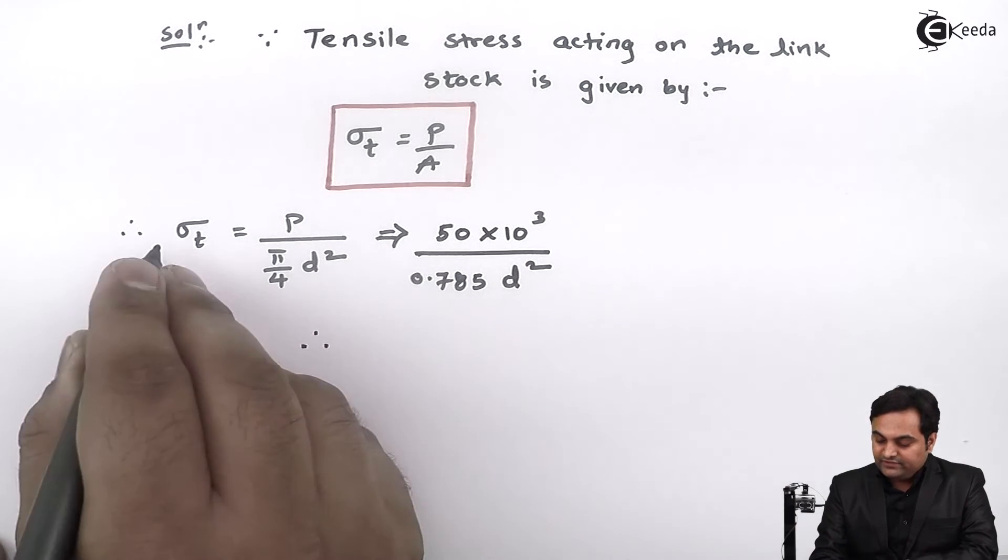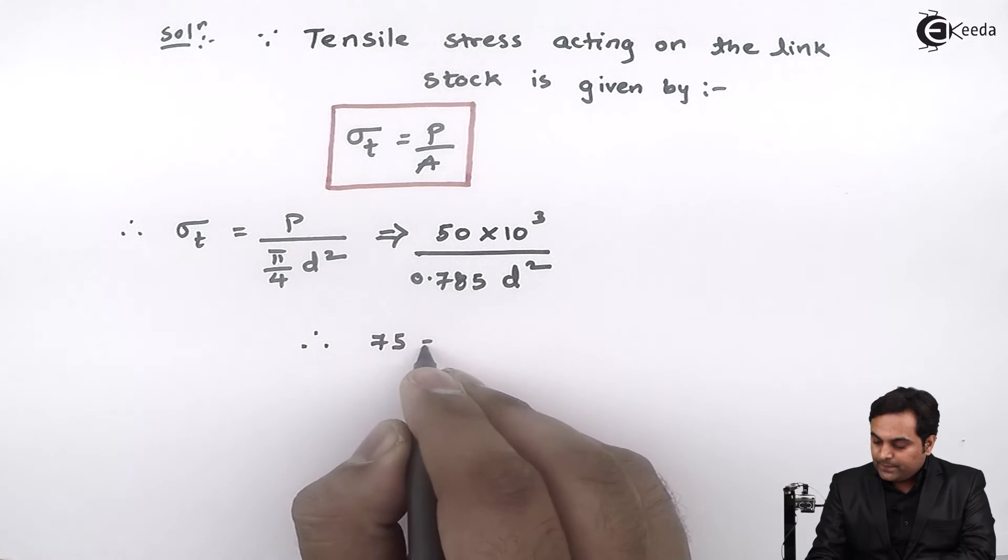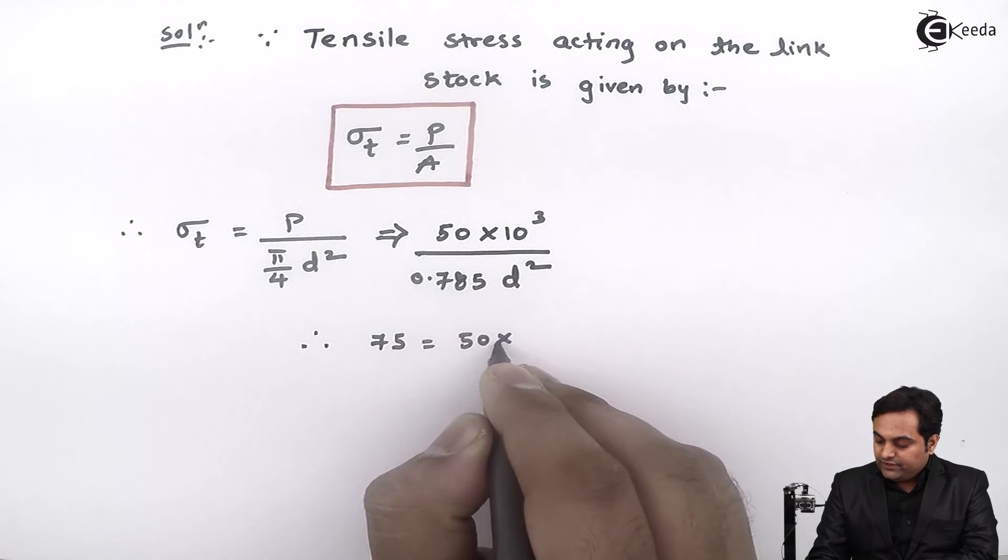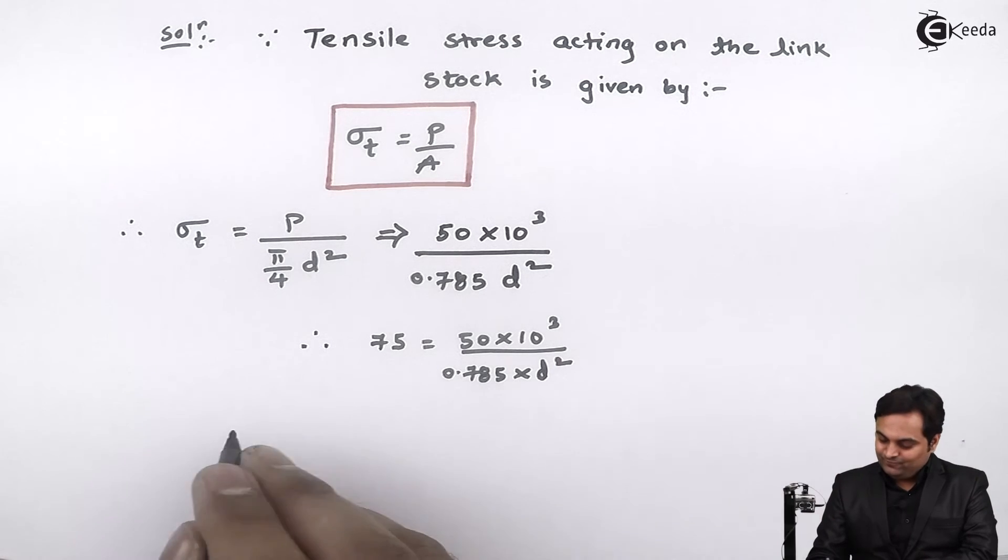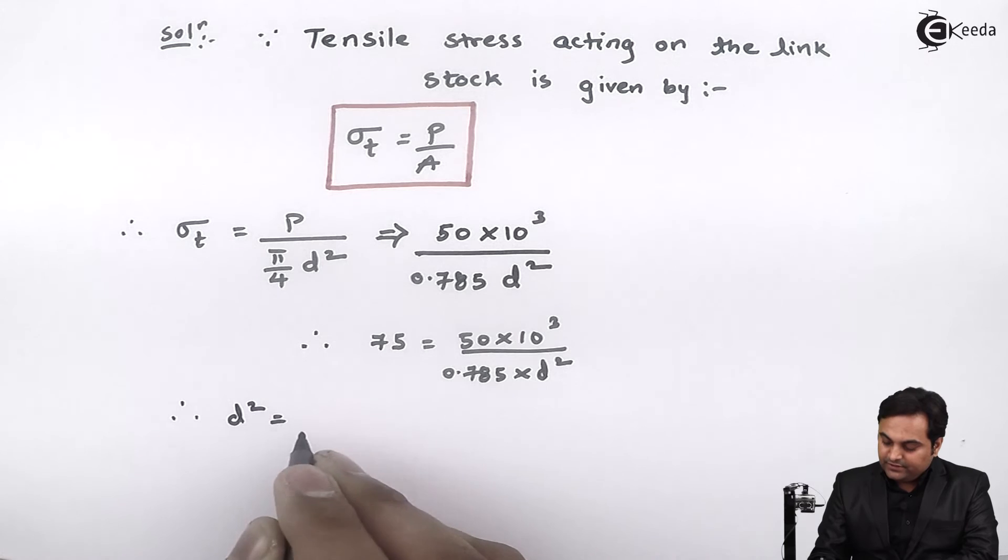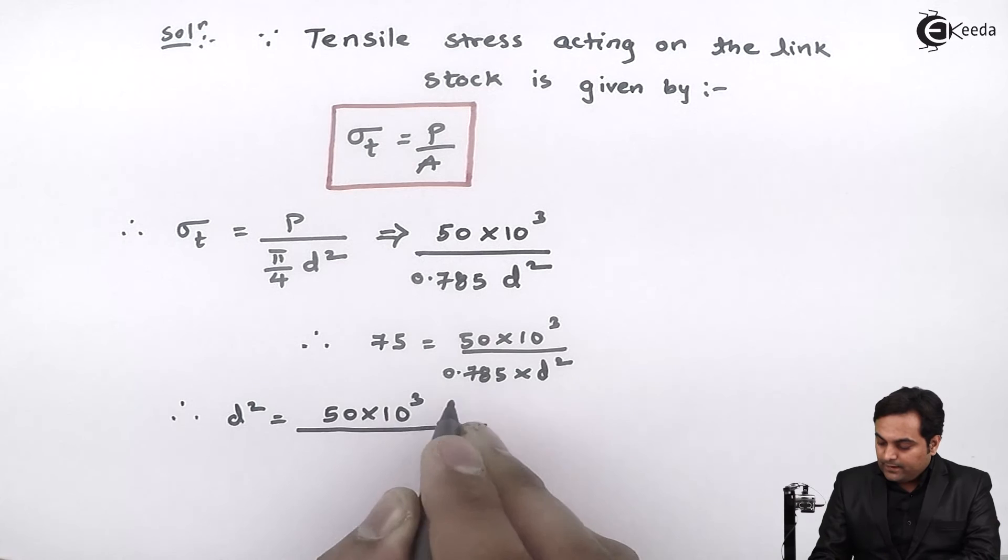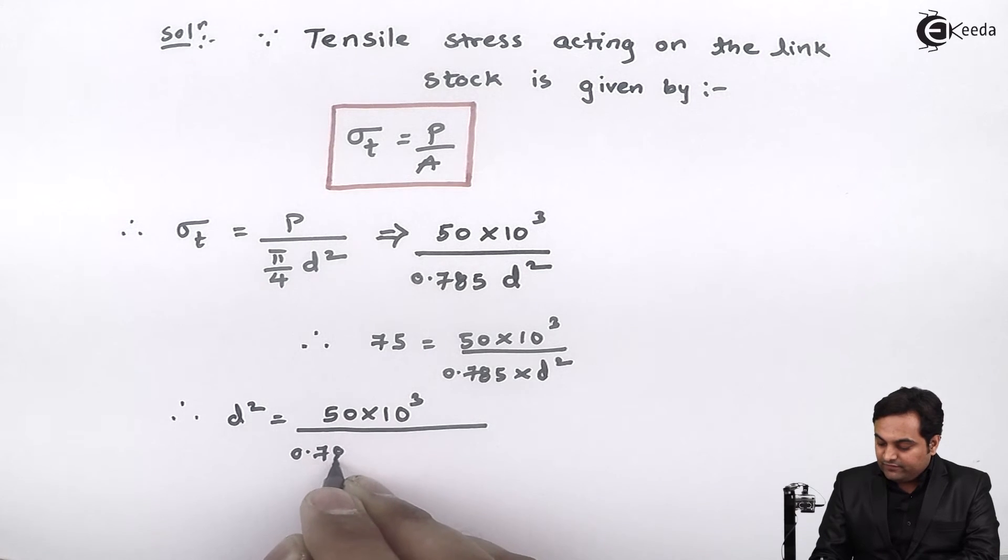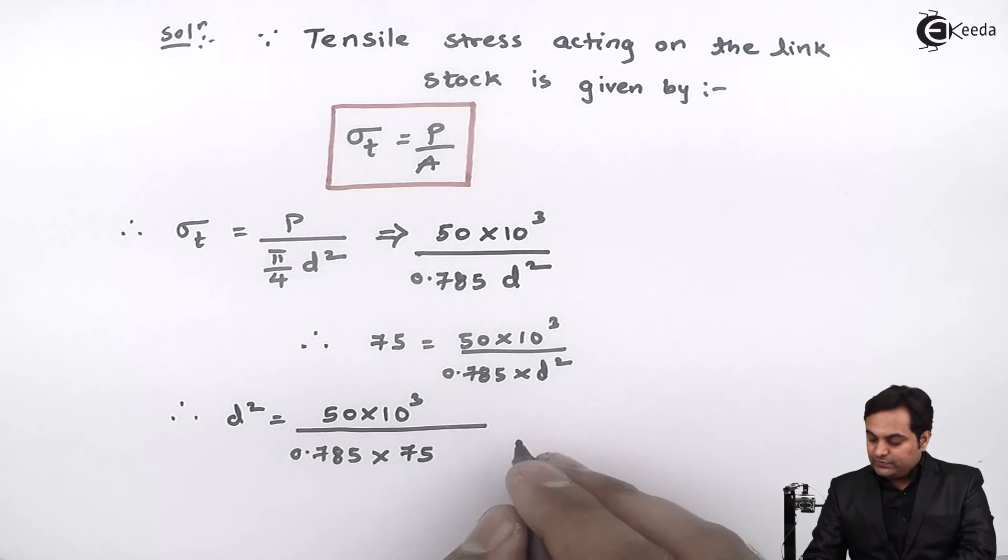The tensile stress is 75 N/mm², so 75 = 50×10³/(0.785d²). Therefore, d² = 50×10³/(0.785×75).